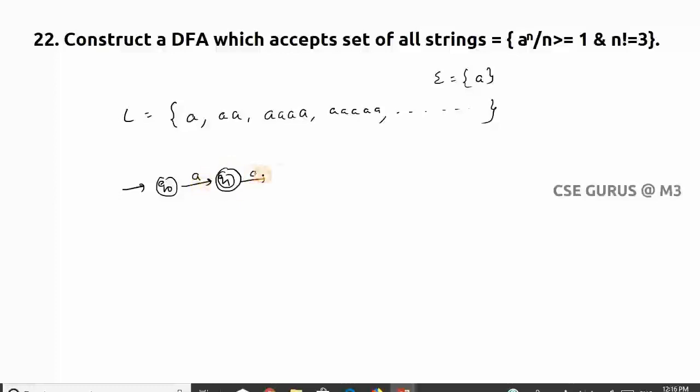Now you can say, why take two final states like this? Why can't we put self-loop here? If you put self-loop here, it will accept three a's also, but here it should not accept. So if I get three a's, I will go to q3.